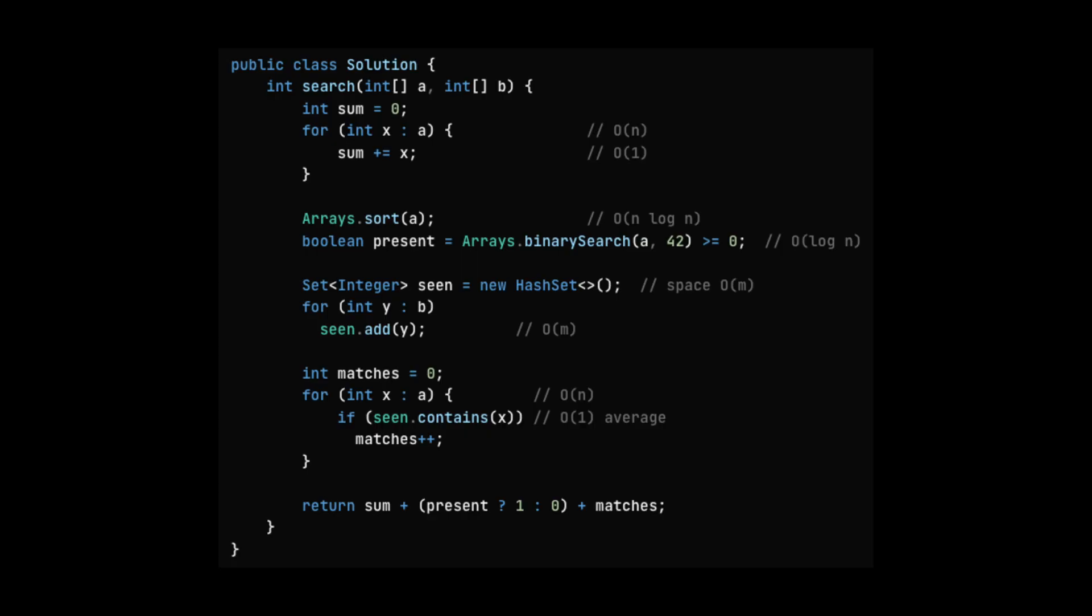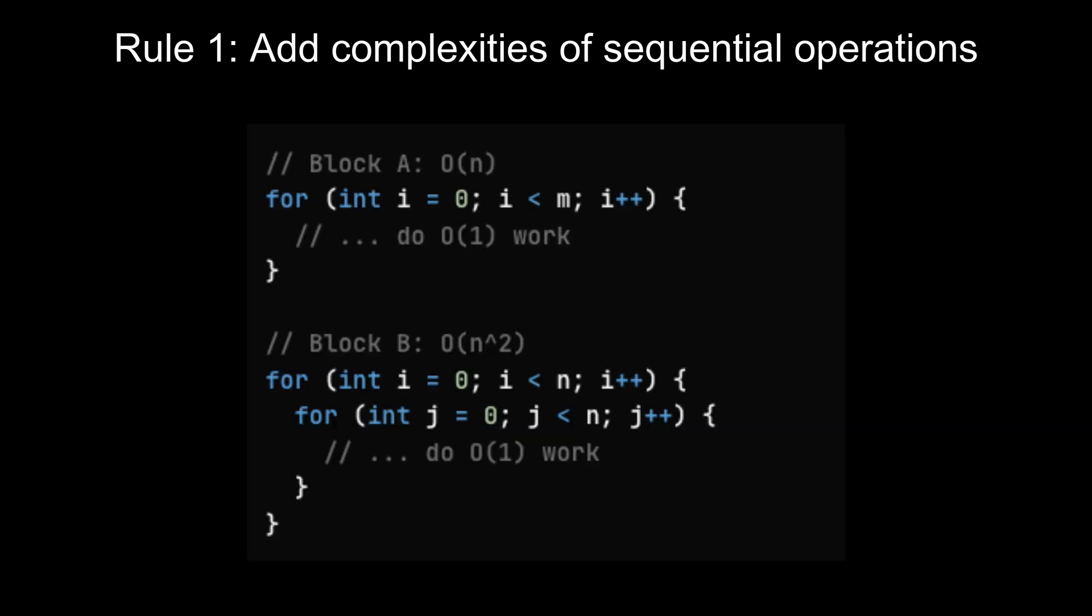Now let's talk about how to actually calculate the complexity of a piece of code. The simplest way is to break your code down into parts and analyze these parts separately. Rule 1: Add complexities of sequential operations. If your algorithm performs one block of work after another, you add their time complexities.